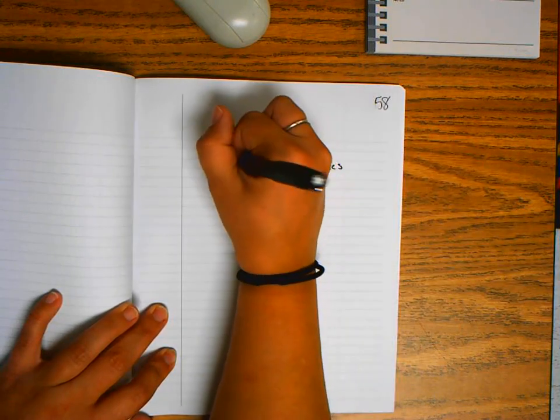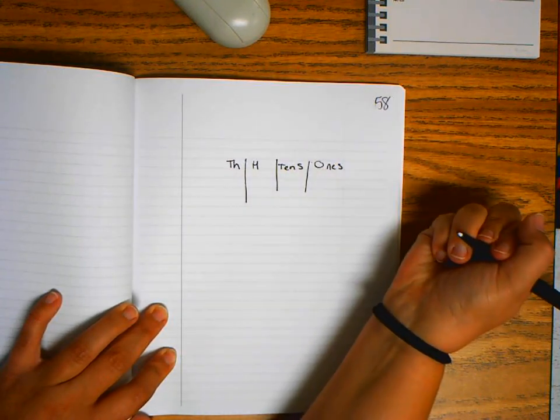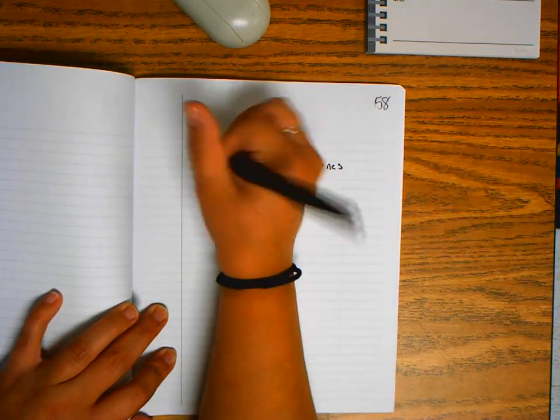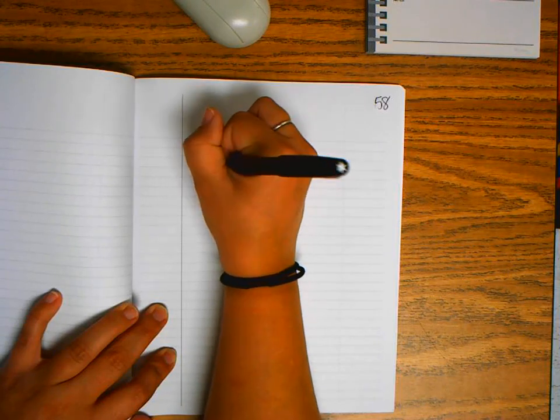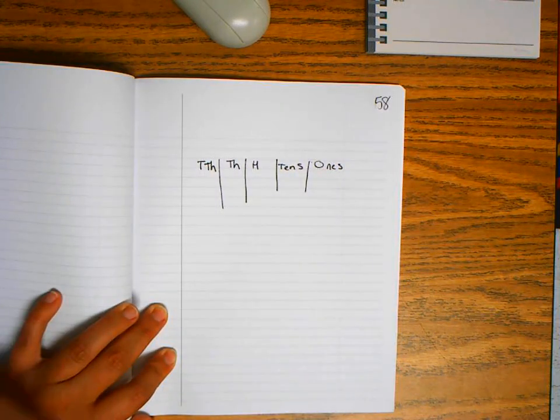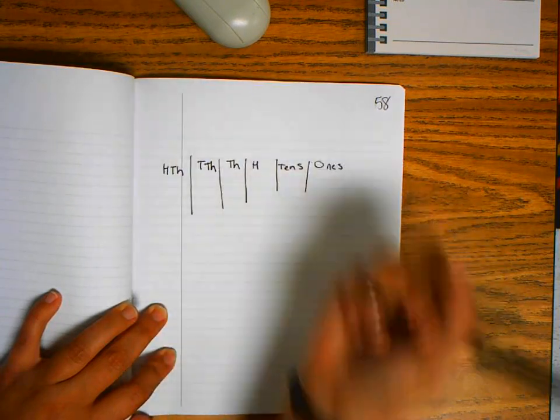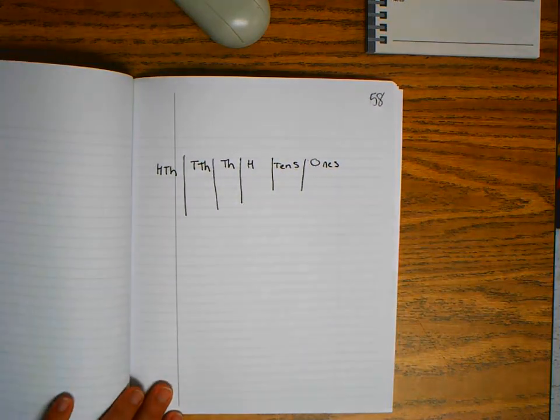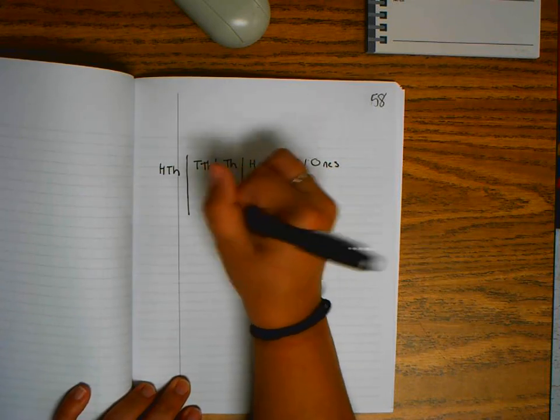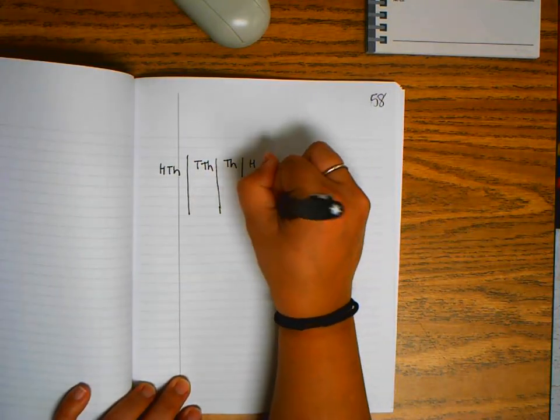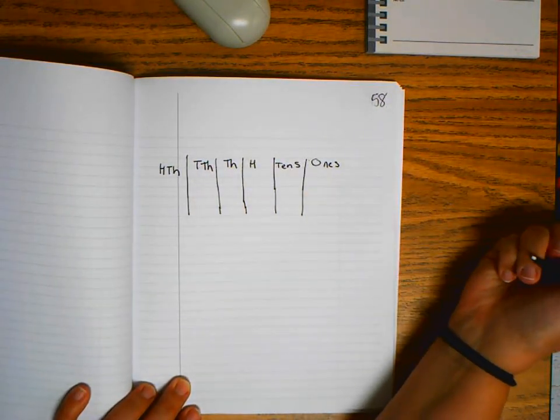I'm going to abbreviate the place values: Th for thousands, TTh for ten thousands, HTh for hundred thousands, H for hundreds. This is our standard place value chart.